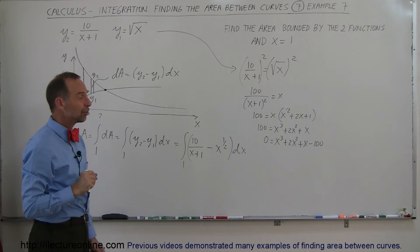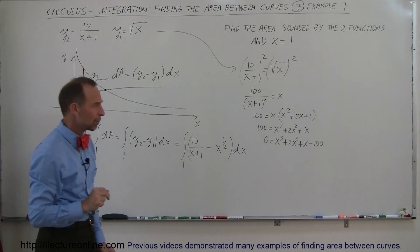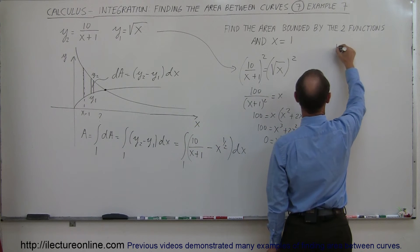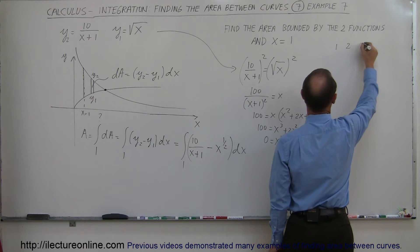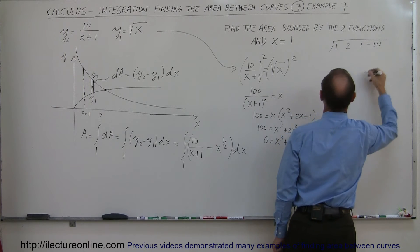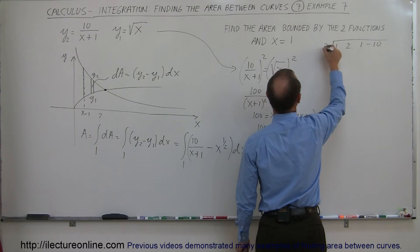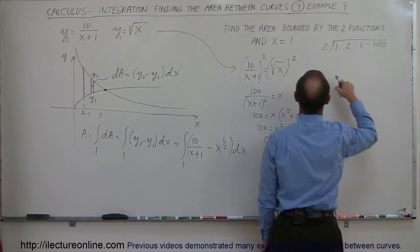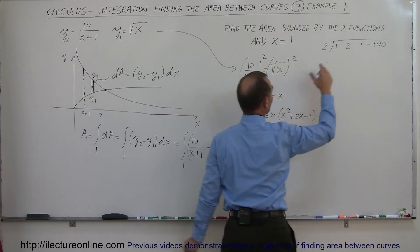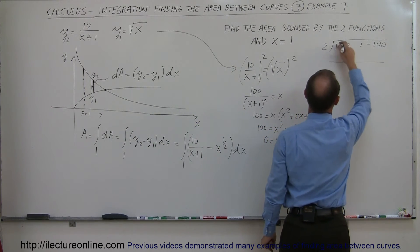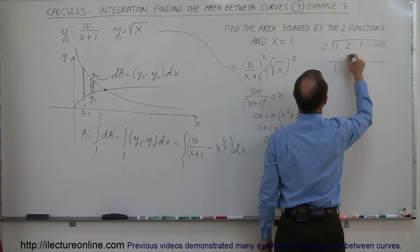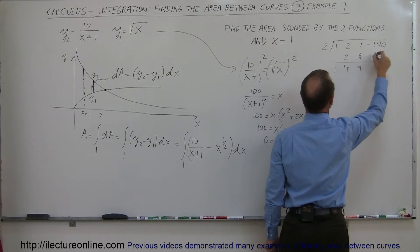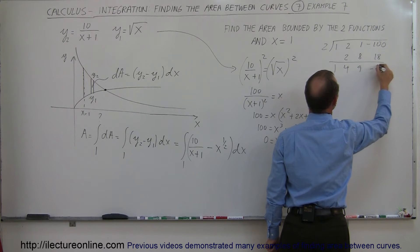That may not be easy, but there's a synthetic division trick we can try. I'll take the coefficients: 1, 2, 1, and minus 100 — and take a guess. Let's try x equals 2. Drop down the 1; 2 times 1 is 2; 2 plus 2 is 4; 2 times 4 is 8; 1 plus 8 is 9; 2 times 9 is 18; and that gives minus 82.